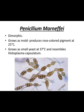Now, Penicillium marneffei. It is dimorphic — at body temperature it grows as yeast, and at environmental temperature it grows as mold. It grows as mold and produces a rose-colored pigment at 25 degrees centigrade, and grows as yeast at 37 degrees centigrade.